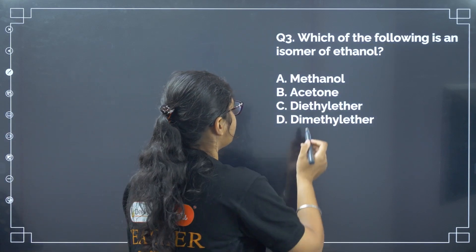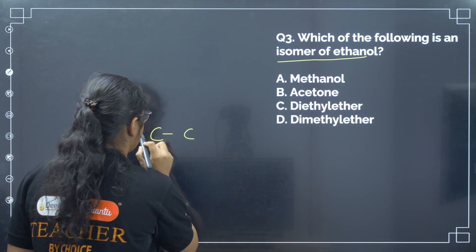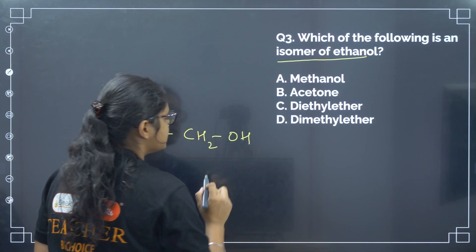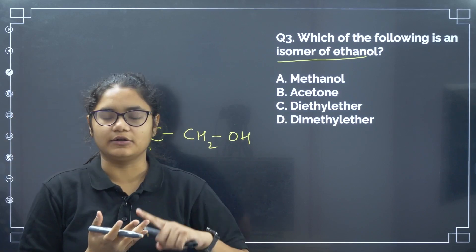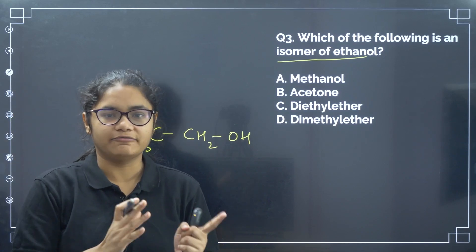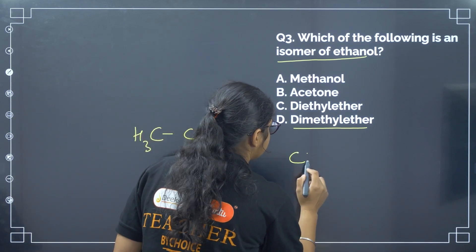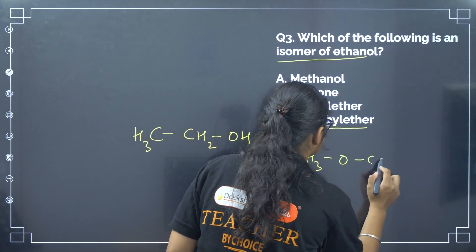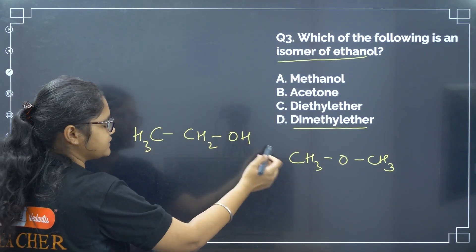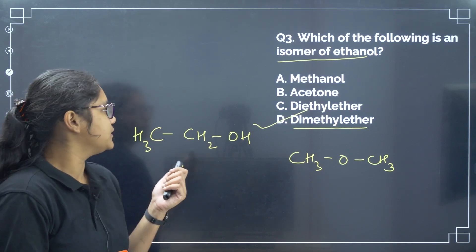Next: which of the following is an isomer of ethanol? Ethanol has CH3-CH2-OH. Remember: for aldehydes, ketones are the isomers, and for alcohols, ethers are the functional isomers. Dimethyl ether is CH3-O-CH3 — two carbons, six hydrogens, one oxygen, same as ethanol. Correct answer is option number D.